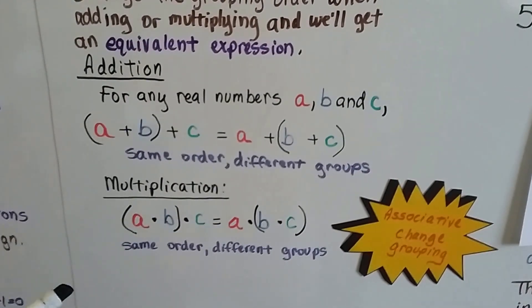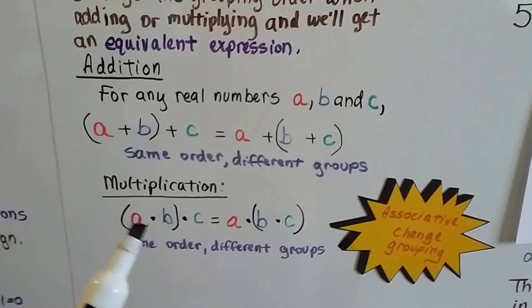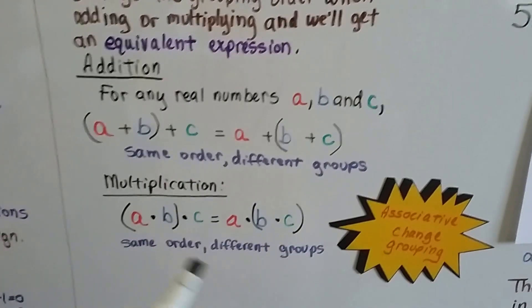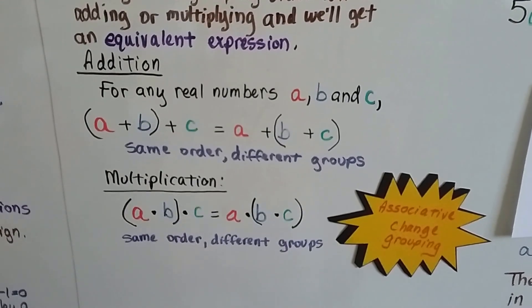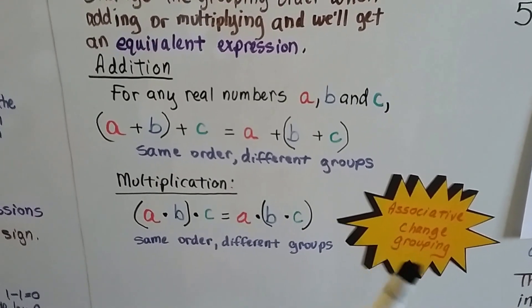That's the associative property. And in multiplication, they're in the same order, A, B, C, A, B, C. They're just grouped differently. A, B together, then B, C together. Same order, different groups. Associative changes grouping.